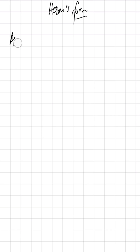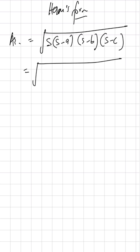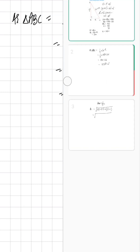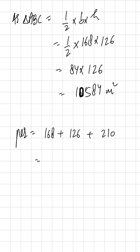Now let's verify this using Heron's formula: Area = √(s(s−a)(s−b)(s−c)), where s is the semi-perimeter and a, b, c are the sides of the triangle. First we find the perimeter by adding all three sides: 168 + 126 + 210.